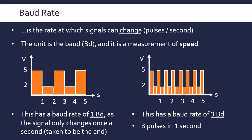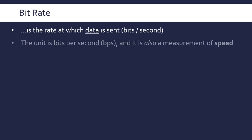Another key term which is more prevalent is the bit rate, and this is the rate which data is actually sent. This is in terms of bits per second, so its unit is bits per second, bps. It's also a measurement of speed.